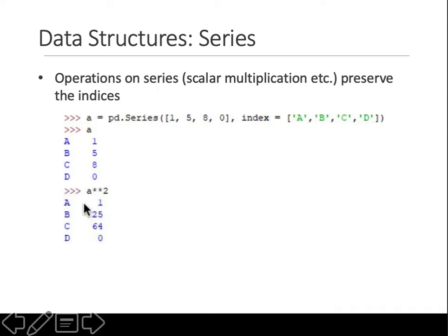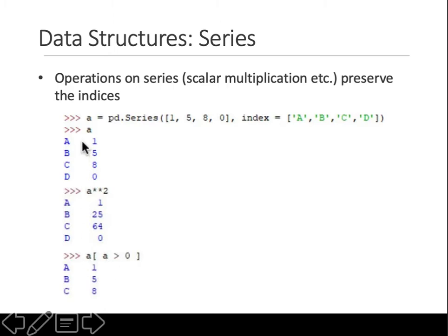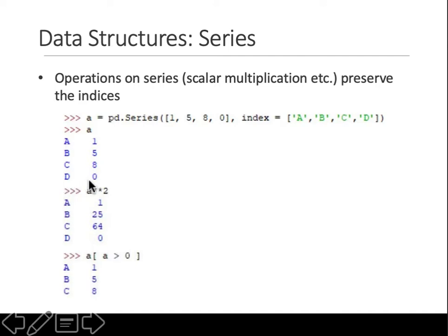Operations preserve the indices, and we performed the operation on series 'a' without changing that series. Any other operation you want to perform you can perform on the same series as well. For example, you can filter: in this series give me all values greater than zero. The result shows 1, 5, 8 — the zero value is excluded.